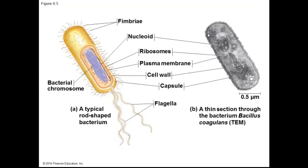Prokaryotic cells are fairly simple. Here is a diagrammatic version showing the chromosome, organized in a glob. They have a plasma membrane, cell walls, and many of them have flagella, which we will learn about later. Notice that they are very, very small. This is an electron micrograph of a prokaryotic cell, and its width is only 0.5 micrometers, which is very, very small.